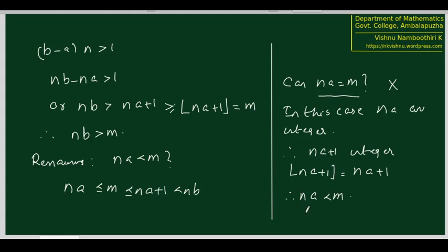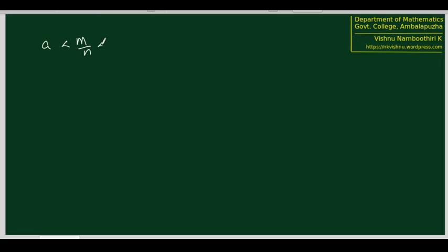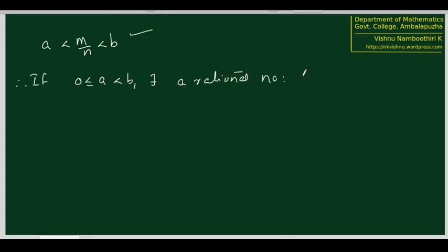Therefore we have found M and N such that NA is less than M and M is less than NB. Combining these two inequalities: NA less than M less than NB, and therefore A less than M by N less than B. We established that we can find natural numbers M and N such that A less than M by N less than B. Since M and N are positive integers, M by N is a rational number that exists between A and B. So the claim is justified: if 0 less than or equal to A less than B, there exists a rational number R in Q such that A less than R less than B.